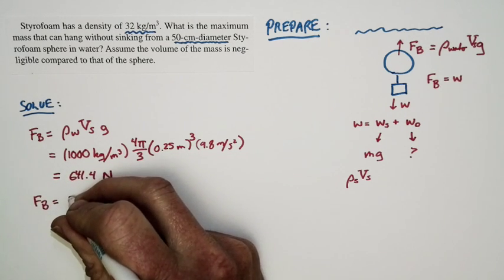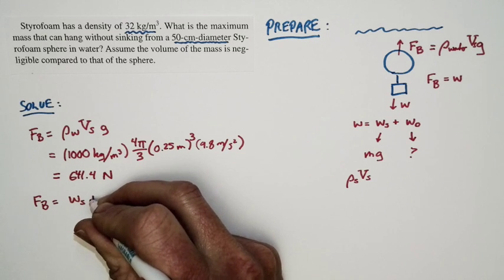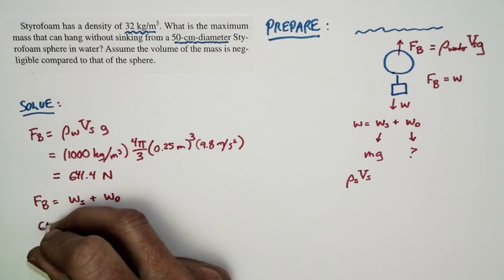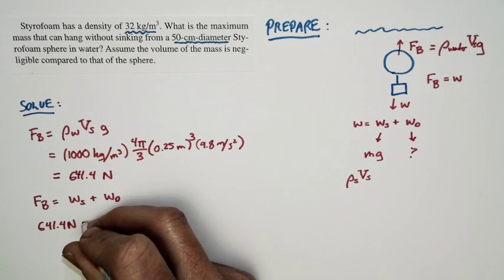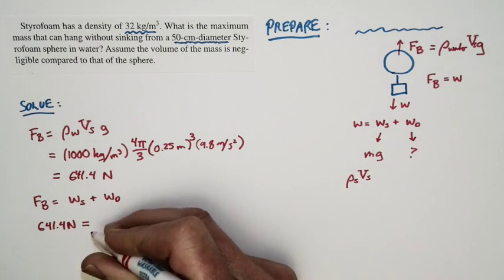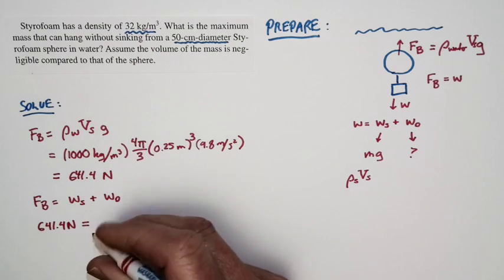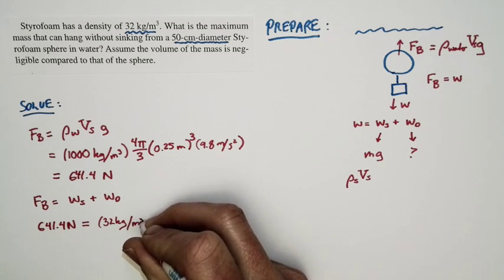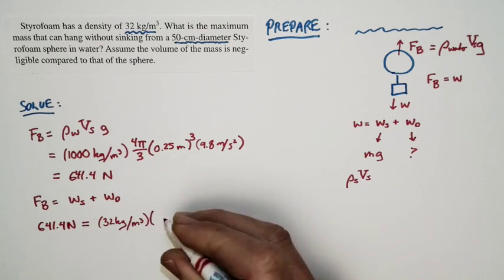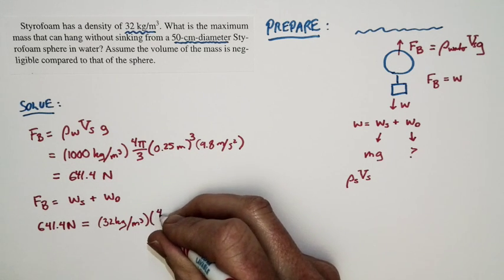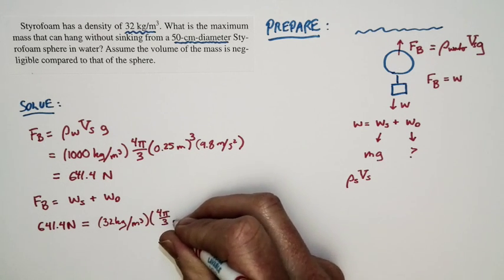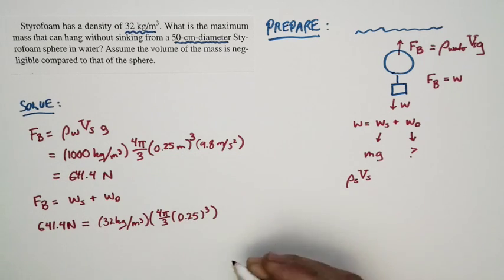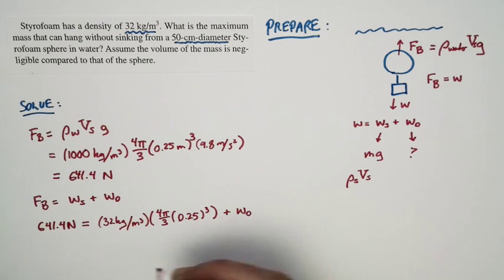But the weight force is equal to the weight of the styrofoam sphere plus the weight of the object. So I'm going to get this. 641.4 newtons is equal to the weight of the styrofoam sphere. Well, that's just the density of styrofoam, which is 32 kilograms per cubic meter, times the volume of the styrofoam sphere. And we know what that is. That's just 4 thirds pi times the radius cubed. And to that, I add the weight of the object.